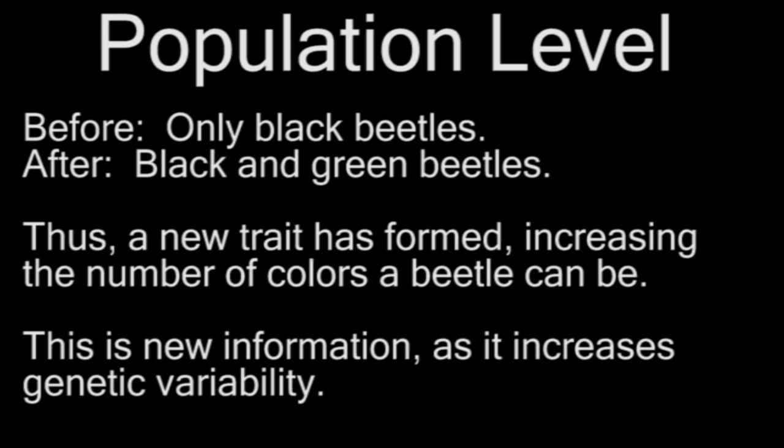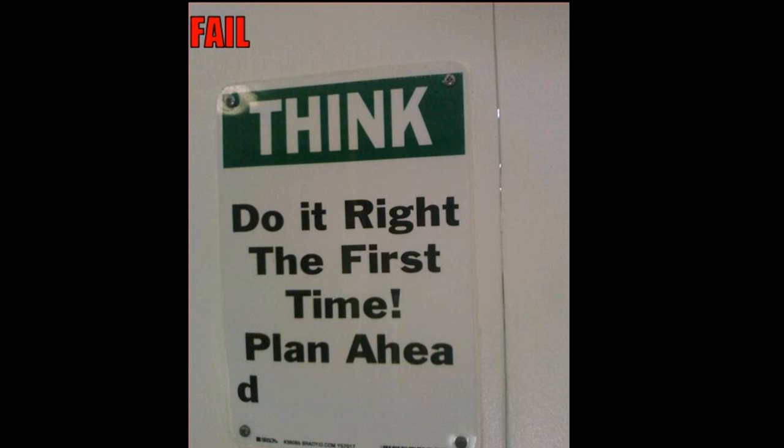Now there are two possibilities. The green-colored gene is brand new, and a new trait — hence new information — has been added. So this example should satisfy most people's curiosity as to whether or not new traits can be added, but this is often not enough, especially for creationists. Creationists will often shift the target and state that that's not new information, but merely the modification of something which was already there.